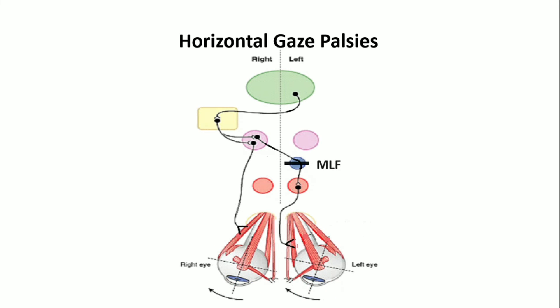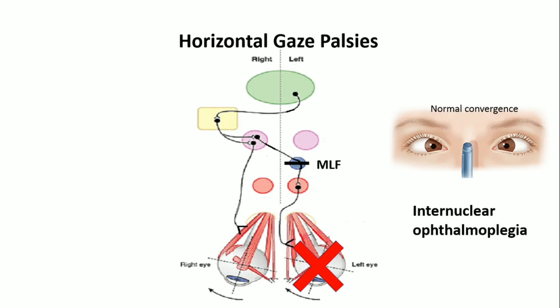If the left MLF is injured, the left eye cannot look to the right. But convergence of the left eye is normal. This is known as internuclear ophthalmoplegia. Also, the right eye has nystagmus.